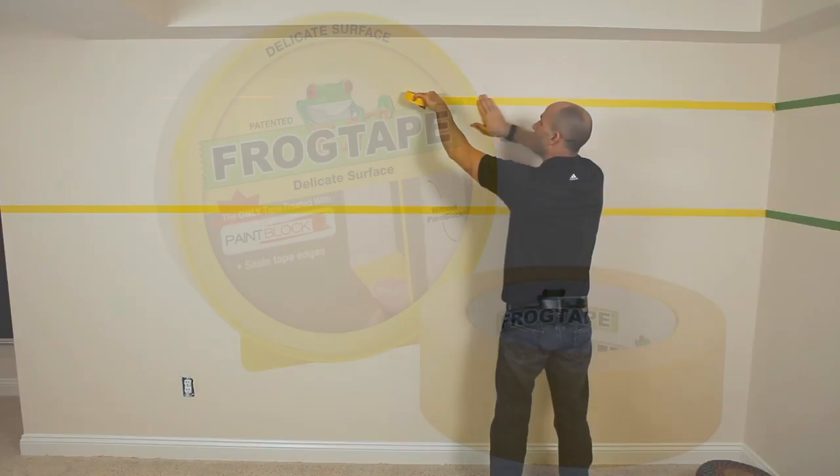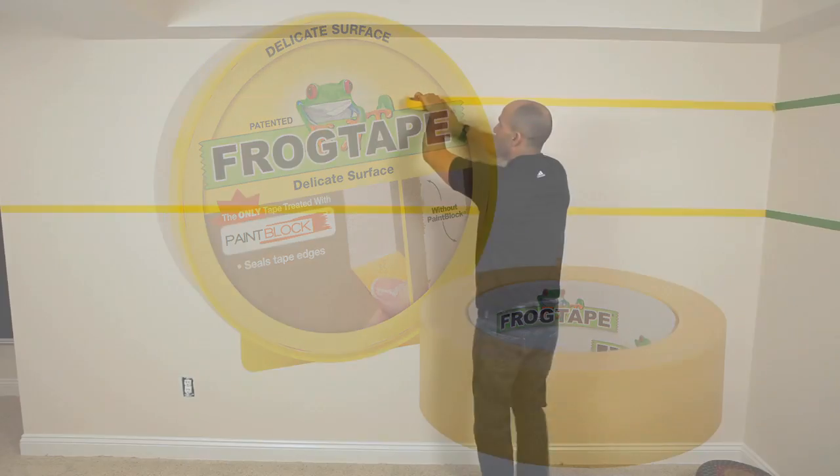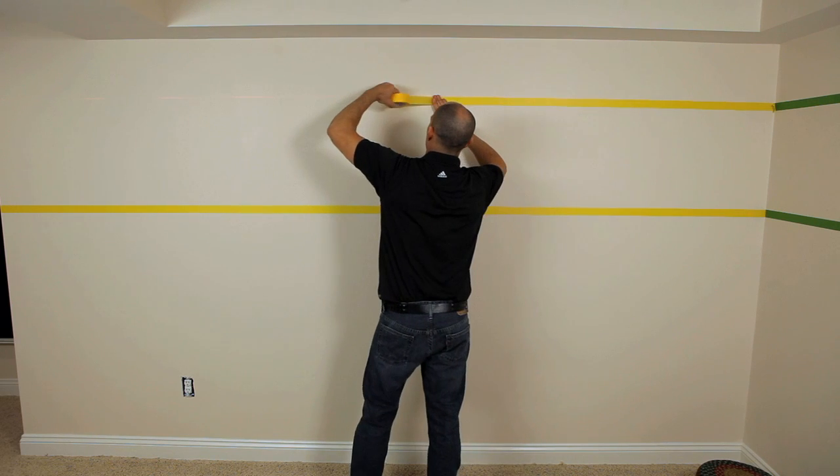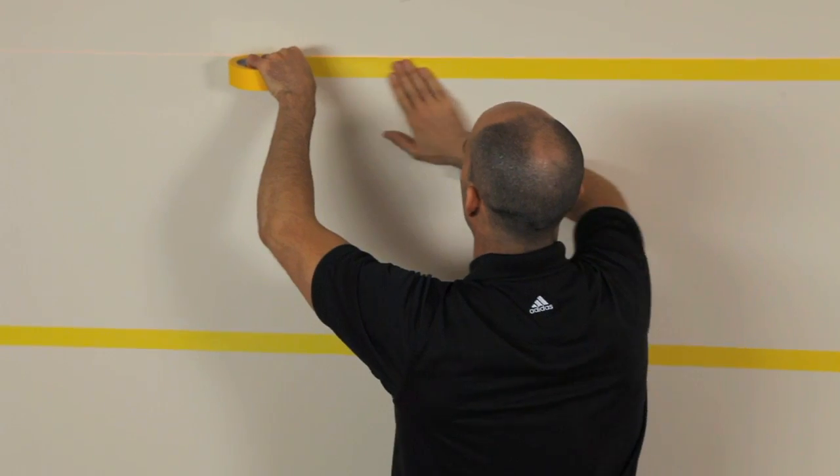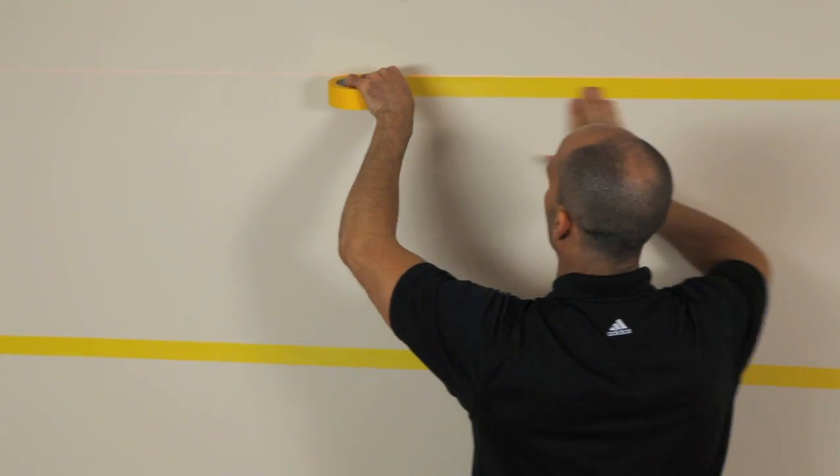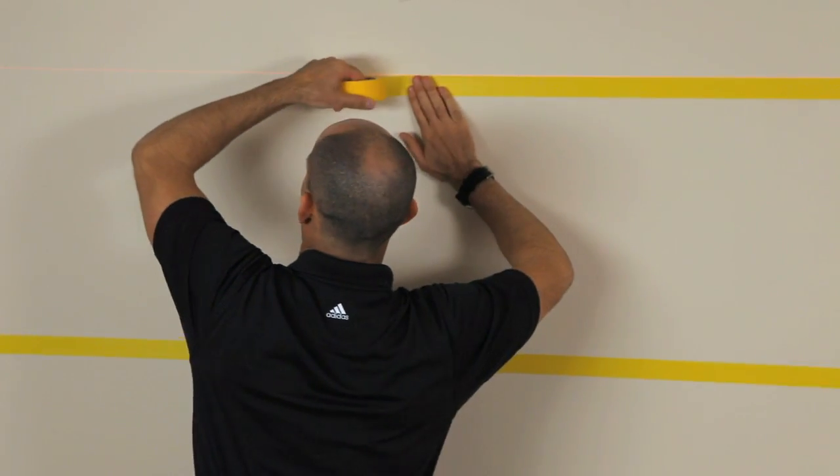I'm using FrogTape delicate surface on this wall because I added a fresh coat of paint yesterday after repairing holes from wall art. FrogTape delicate surface can be applied to fresh paint that is dried for at least 24 hours.